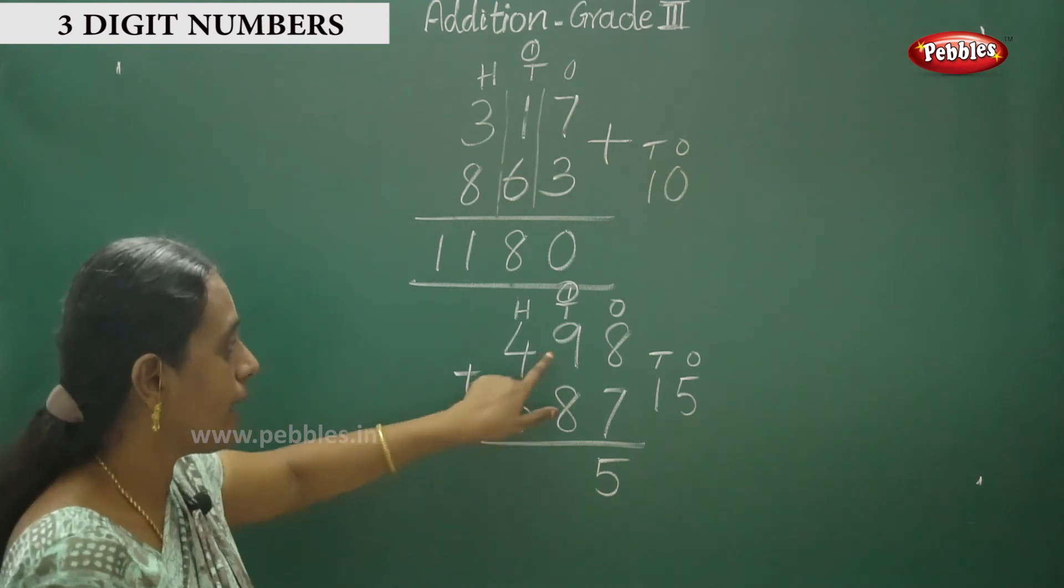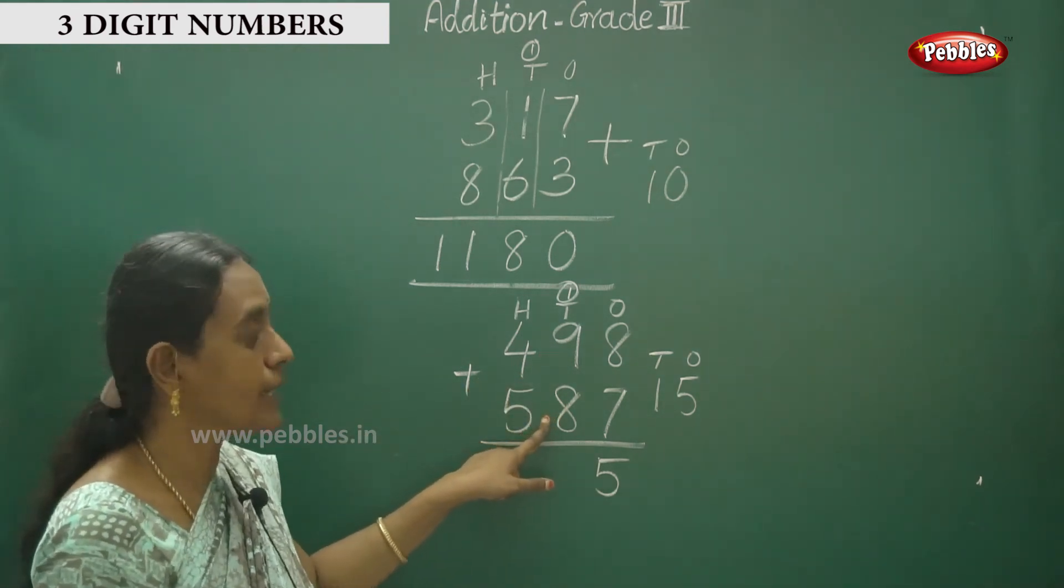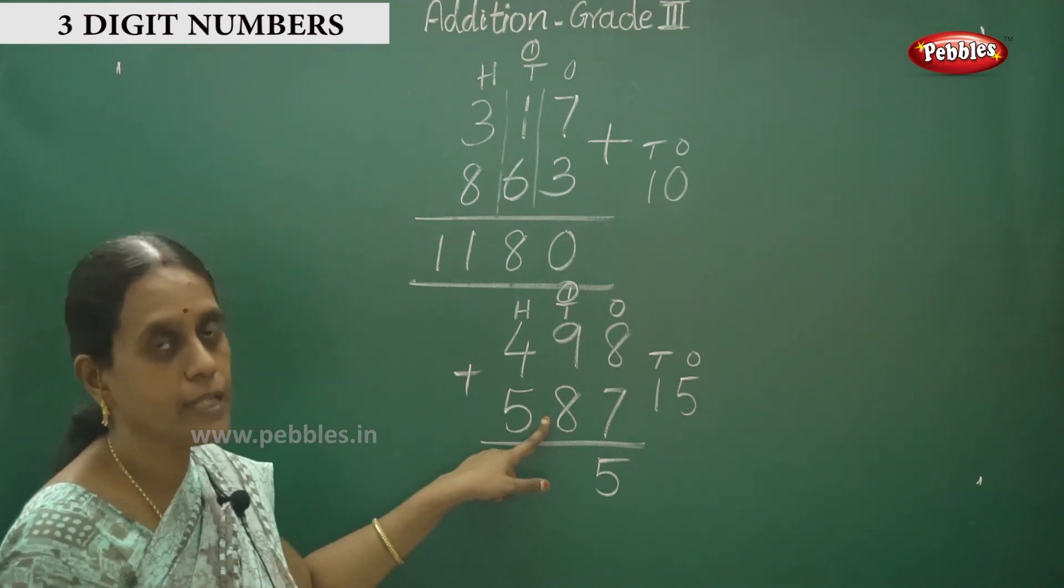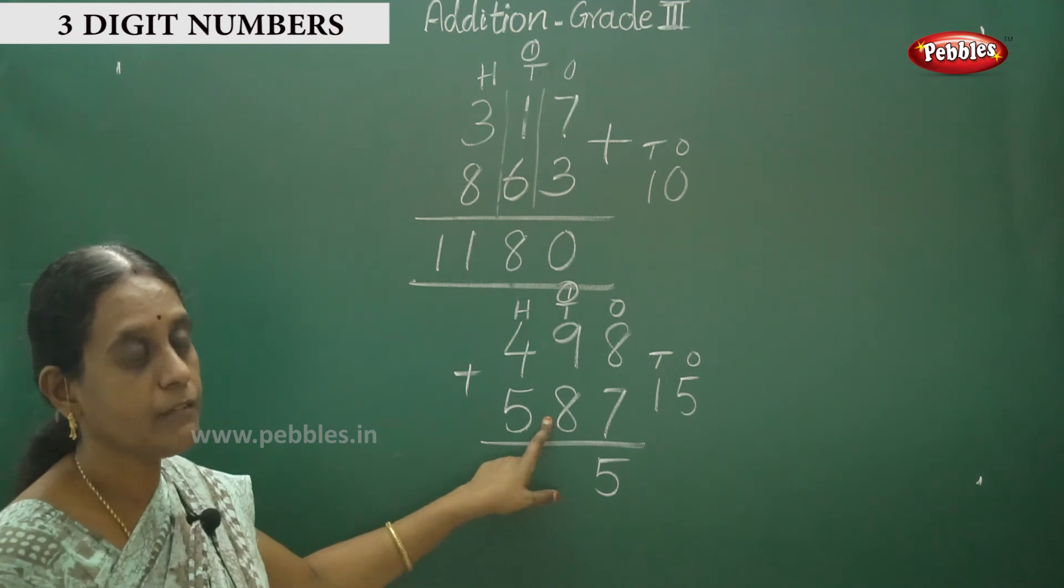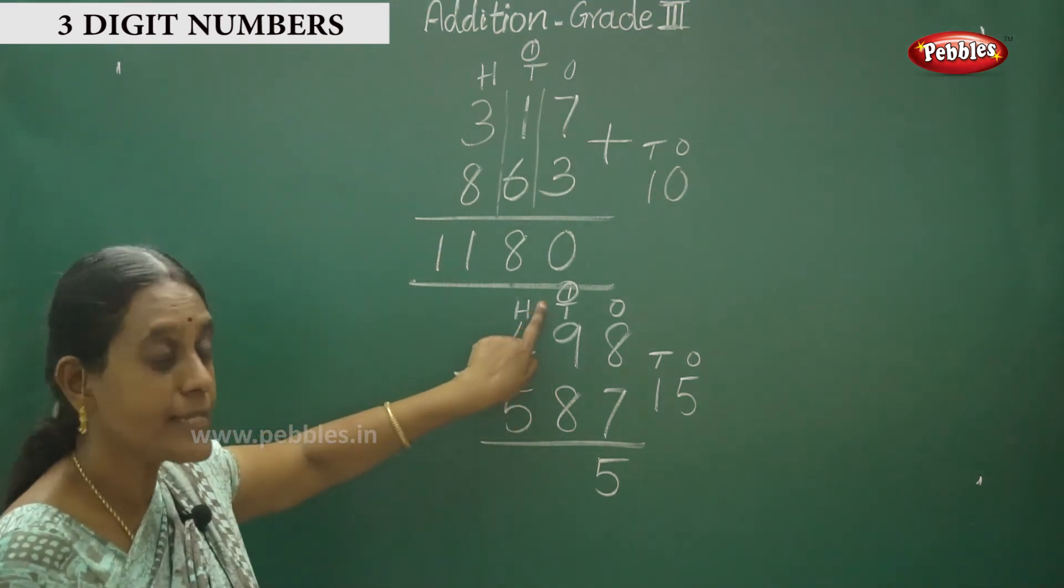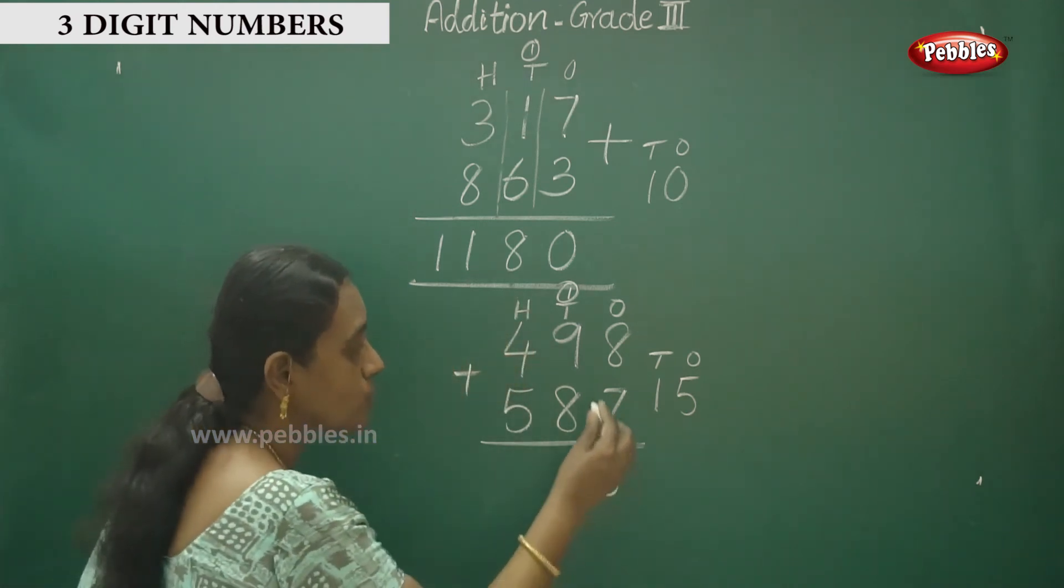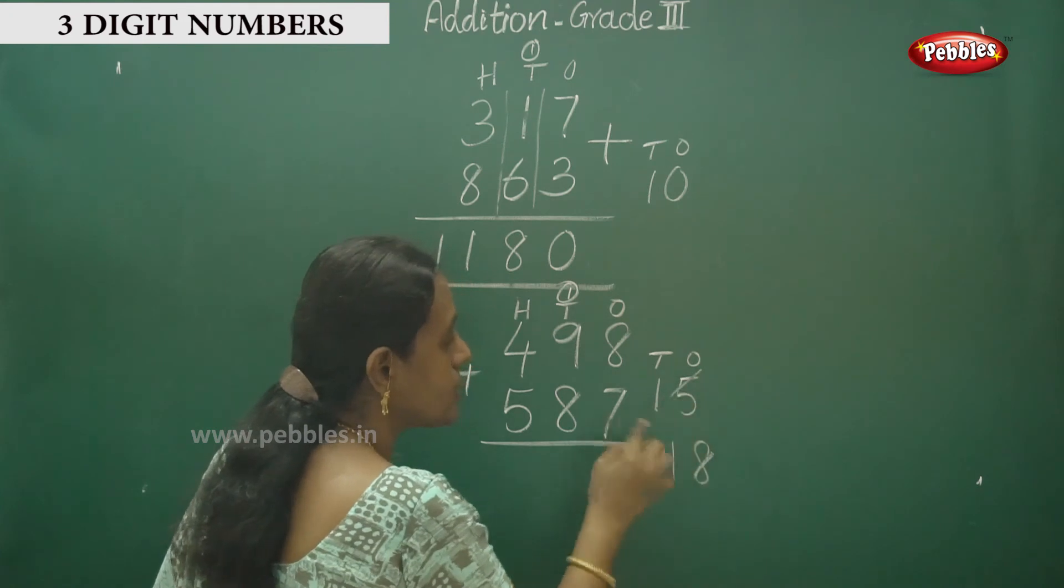And nine plus eight. Nine in the mind, eight in the finger. After nine, the answer is seventeen. Seventeen plus one equals eighteen. So eighteen comes. Eighteen means ones and tens are combined.